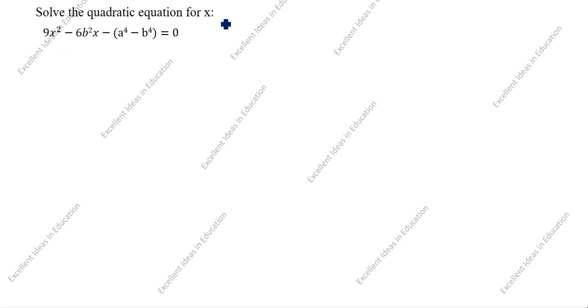Solve the quadratic equation for x: 9x² minus 6b²x minus (a⁴ minus b⁴) is equal to 0.